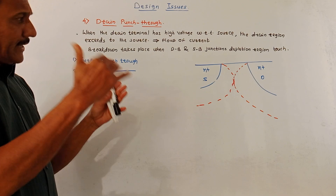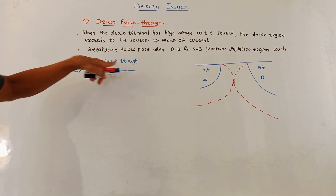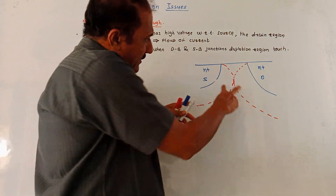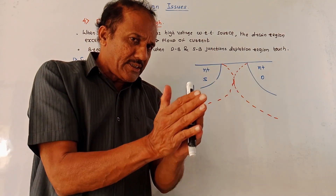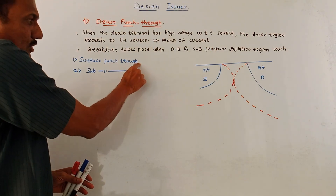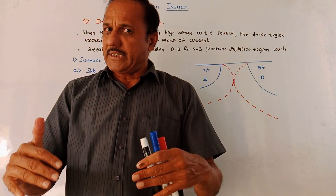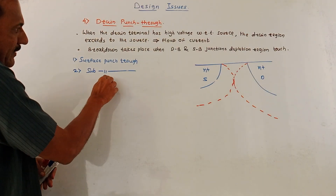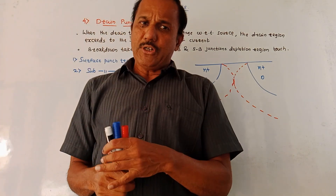This effect is called the drain punch through effect. There are two subcategories: surface punch through, where the two depletion regions touch each other at the surface, and subsurface punch through, where the two depletion regions touch each other below the surface.